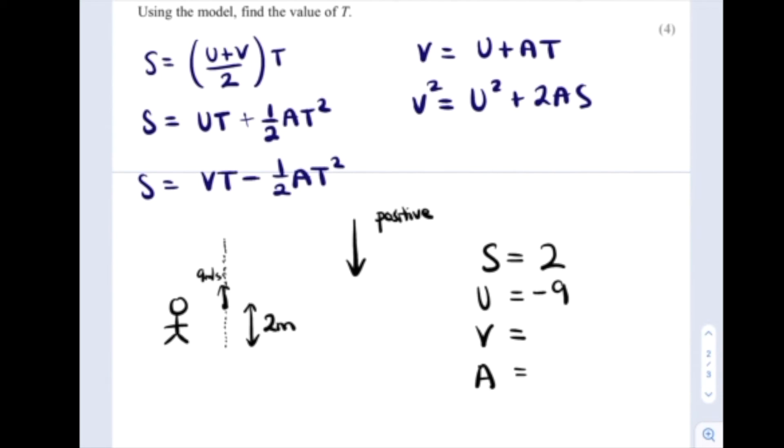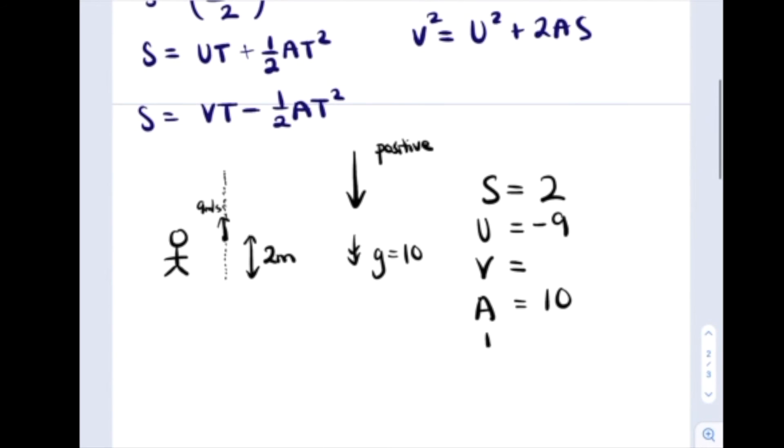We do know the acceleration is due to gravity, so that is 10 in this question. And we're taking that to be in the positive direction. So G is 10, or acceleration with double arrows. And capital T is actually what we're after.